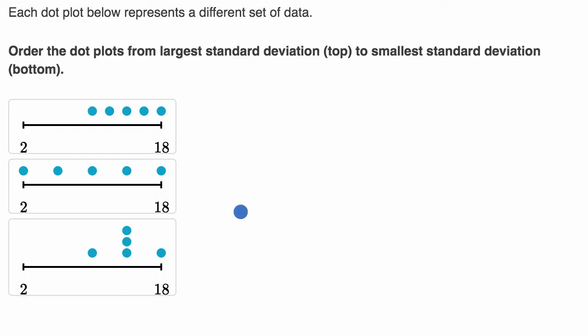All right, so just eyeballing it, this middle one right over here, your typical data point seems furthest from the mean. You definitely have, if the mean is here, you have this data point and this data point that are quite far from that mean. And even this data point and this data point are at least as far as any of the data points that we have in the top or the bottom one.